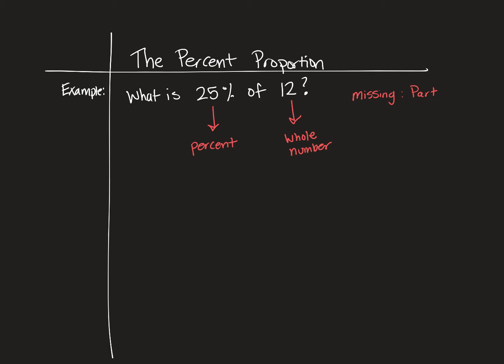There are several ways we can find 25% of 12. We can say 12 times 0.25 will tell us 25% of 12, because 25% is 25 cents of every whole inside of 12, and there are 12 wholes in there. We multiply that out and we find that equals 3 wholes. So 25% of 12 is 3. This is one way we can solve this.